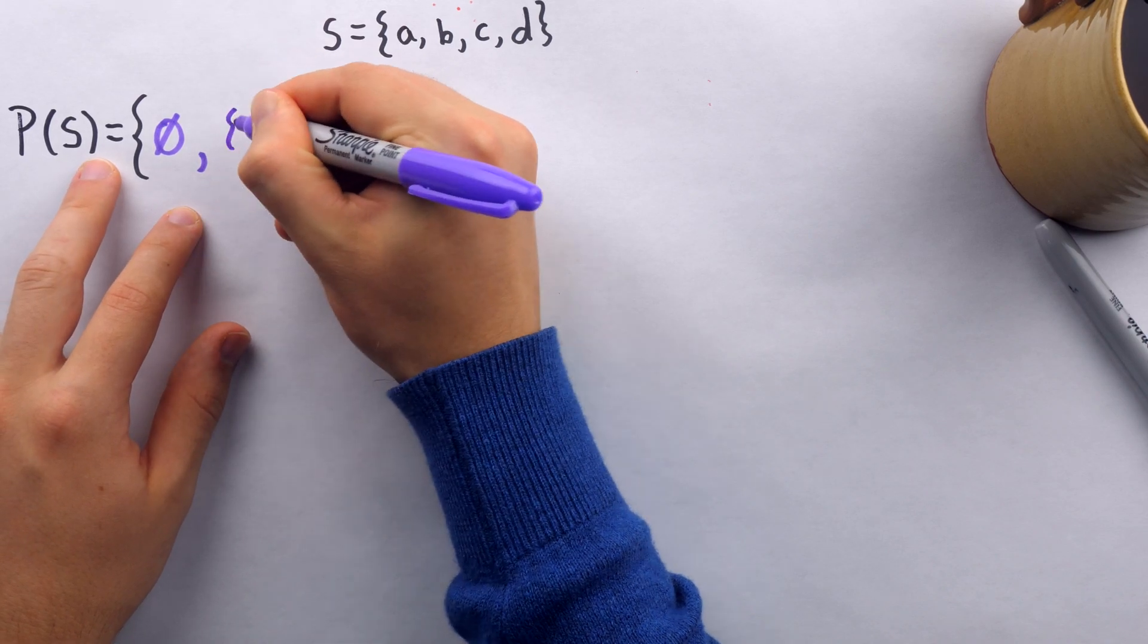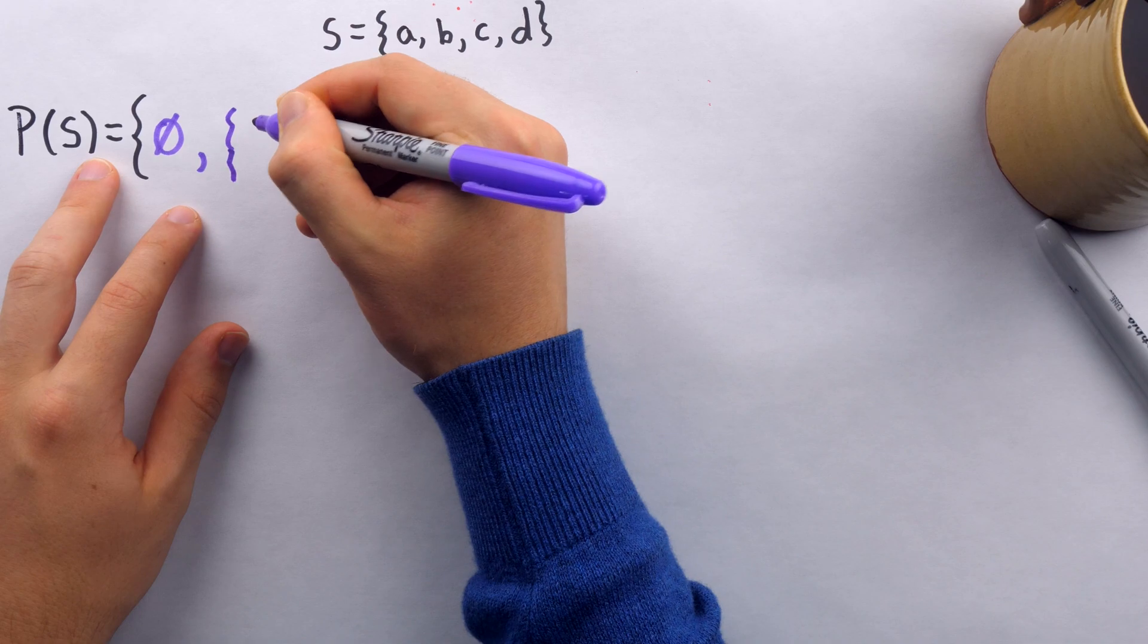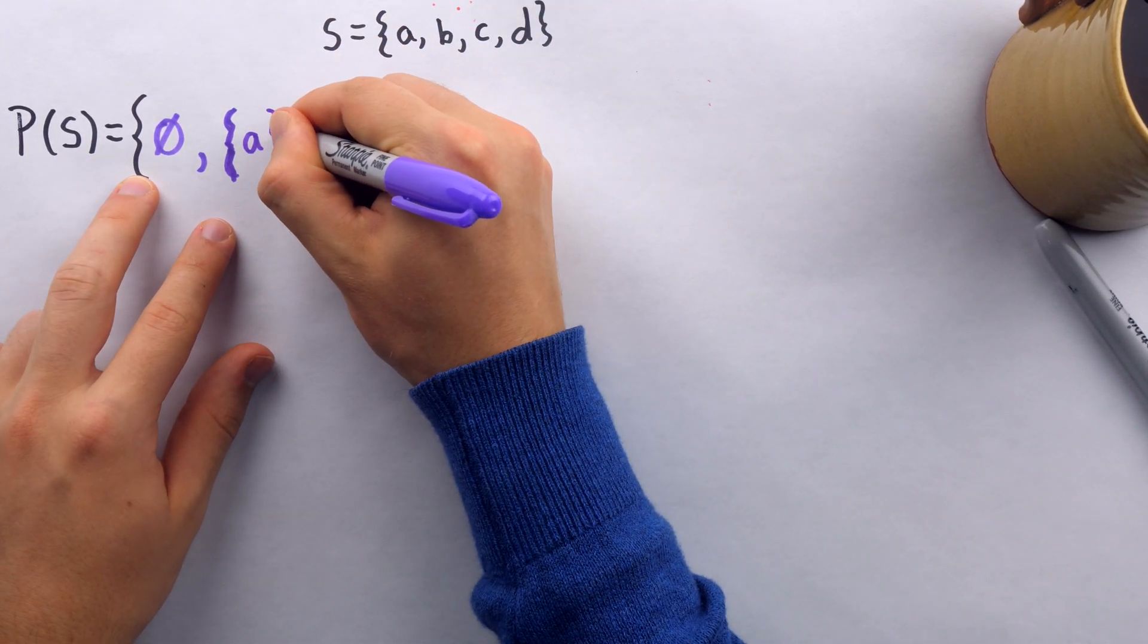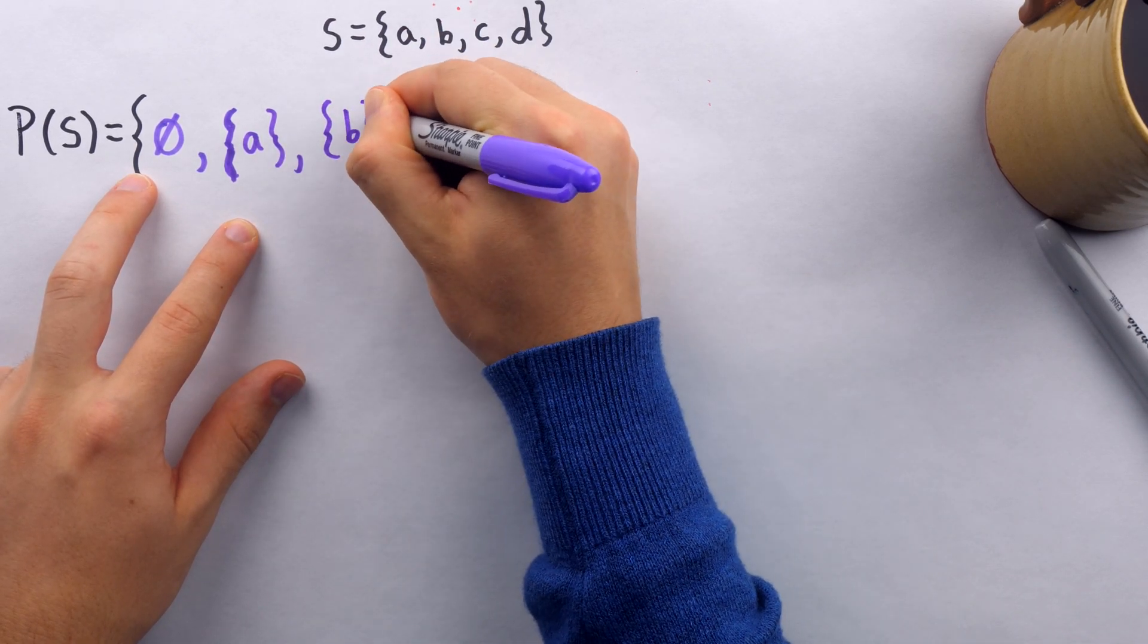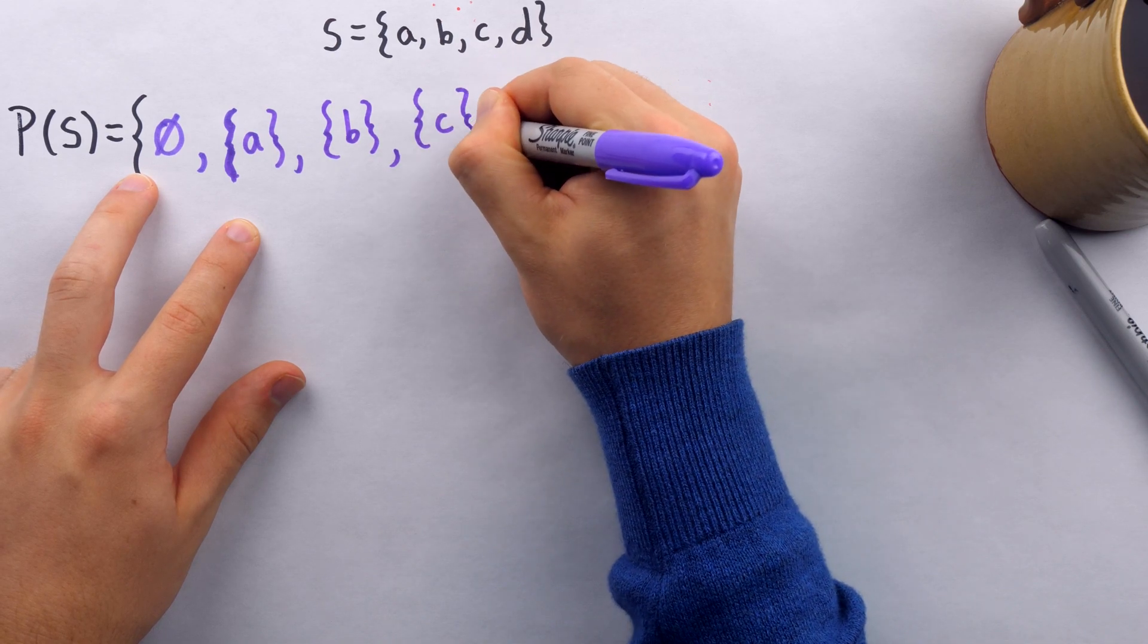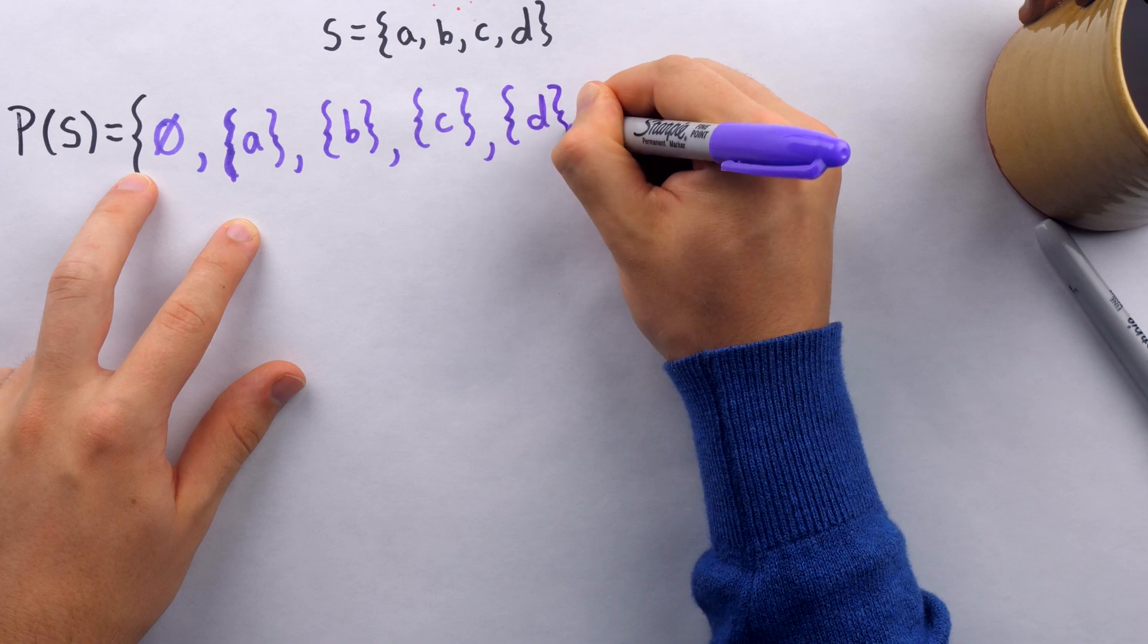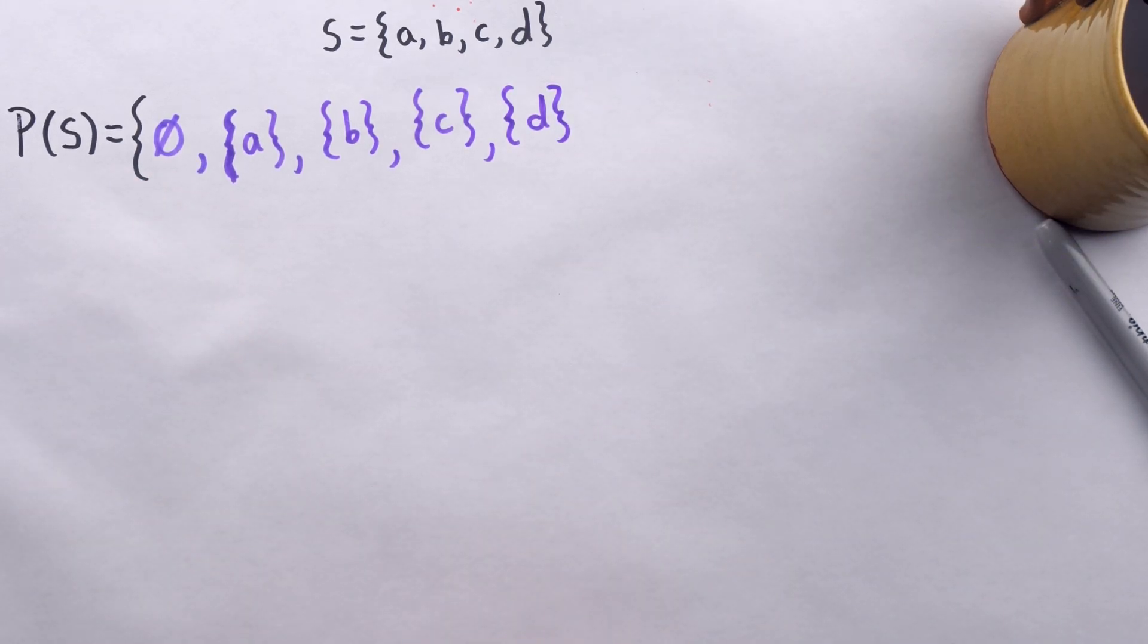I can zoom in just a little bit. Here's my subset which contains A. Here's my subset which contains B. Here's my subset which contains C. And here's my subset which contains D. You are of course welcome to pause the video and try to do this yourself in solidarity with me. It's not the most fun thing in the world, but you've got to do what you've got to do.